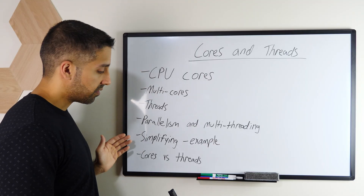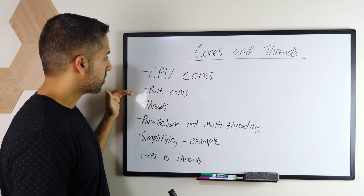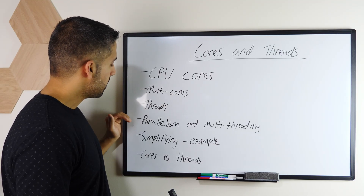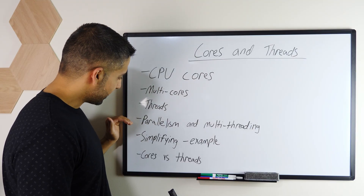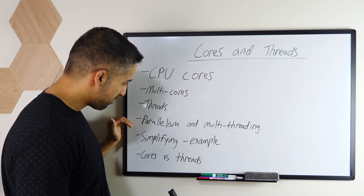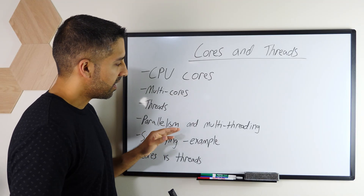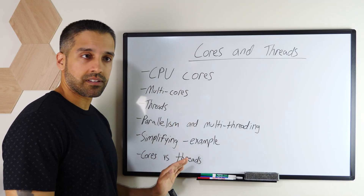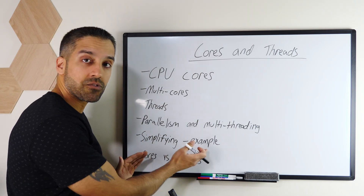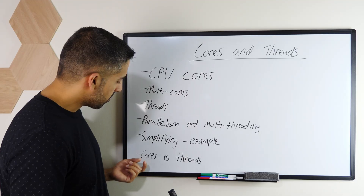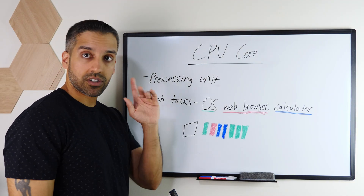Throughout this video I'll be talking about a few main concepts, which I've divided into chapters: CPU cores, multi-cores, threads, parallelism, multi-threading. Then I'm going to simplify things with an analogy example, and finally cover the difference between cores and threads — which is better.